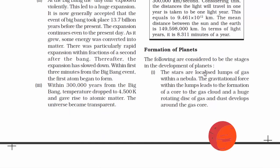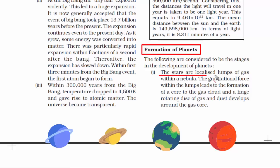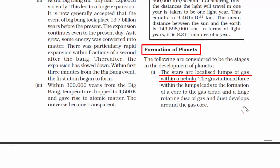Now we are going to talk about the formation of planets. There are some stages in the development of planets. Stars are localized lumps of gases. The gravitational force within those lumps leads to the formation of a core to the gas cloud.